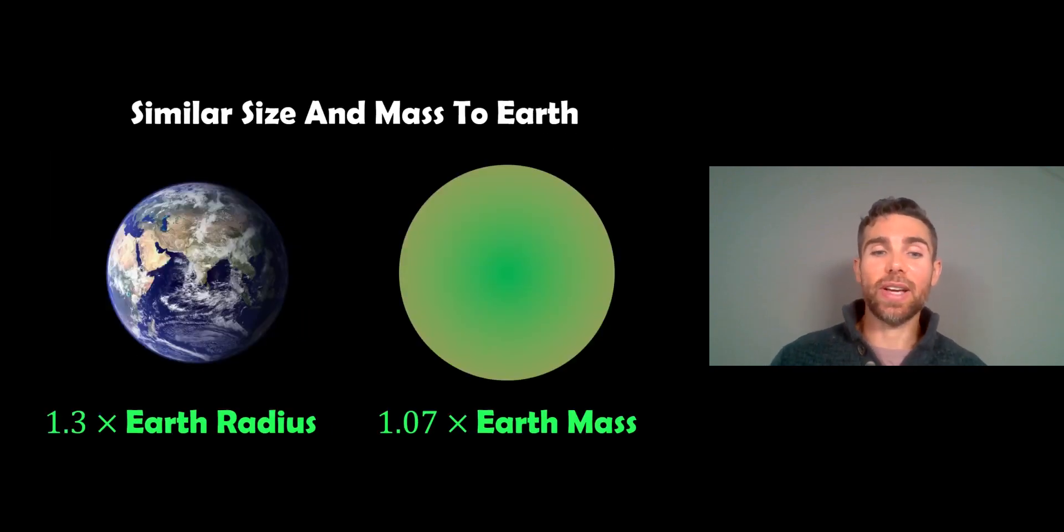So the planet itself is a little bit bigger than Earth, it's about 1.3 times the radius of Earth, so it's a bit physically larger and it has a little bit more mass, so it's a little bit more massive than the Earth, but it's kind of almost comparable in size to the Earth, a little bit bigger basically.